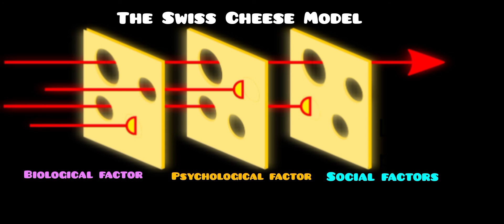If one hole is penetrated, another slice stops the error in its tracks, preventing the individual from substance abuse. But if the holes are lined up and multiple barriers are breached, then the individual will develop an addiction.